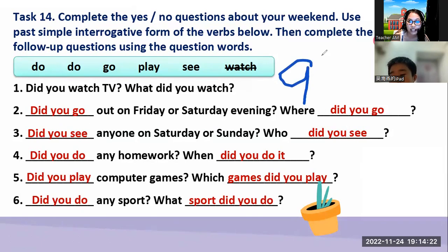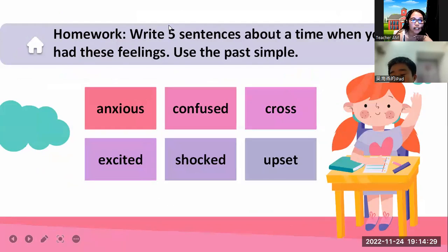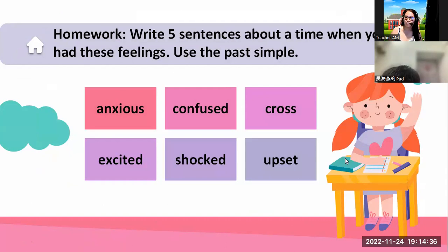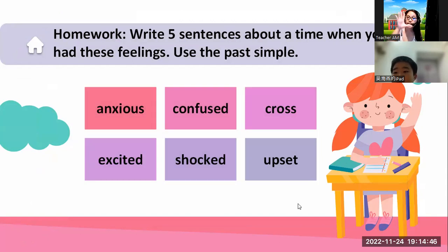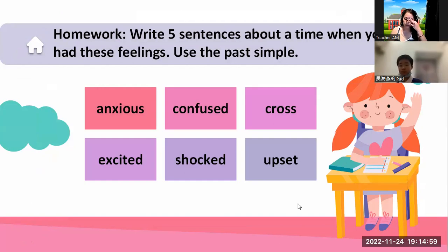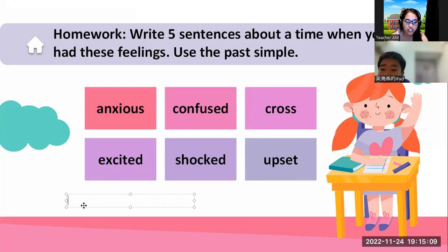You got nine out of ten — that is a good score. So let's proceed with this one. I want you to write five sentences about a time when you had these feelings. You can use the past simple. For example: last night I was so anxious because my sister stole my clothes — she used my clothes without asking permission.